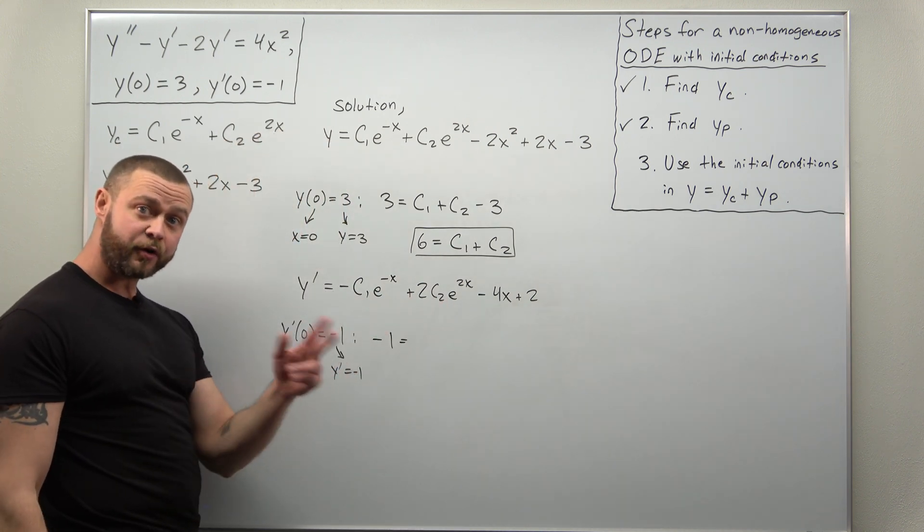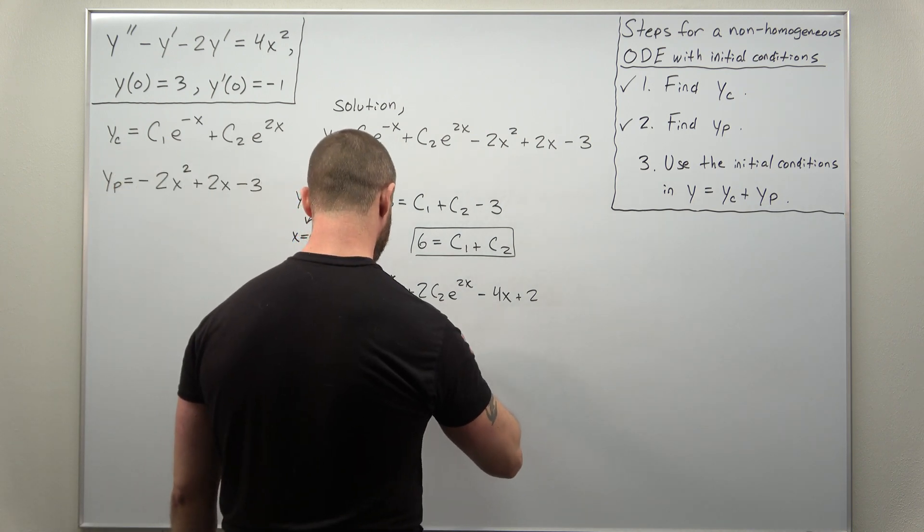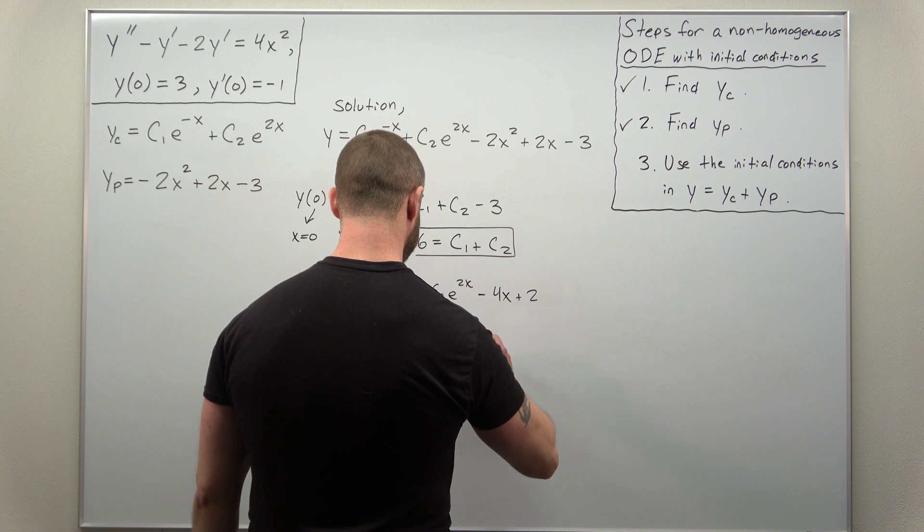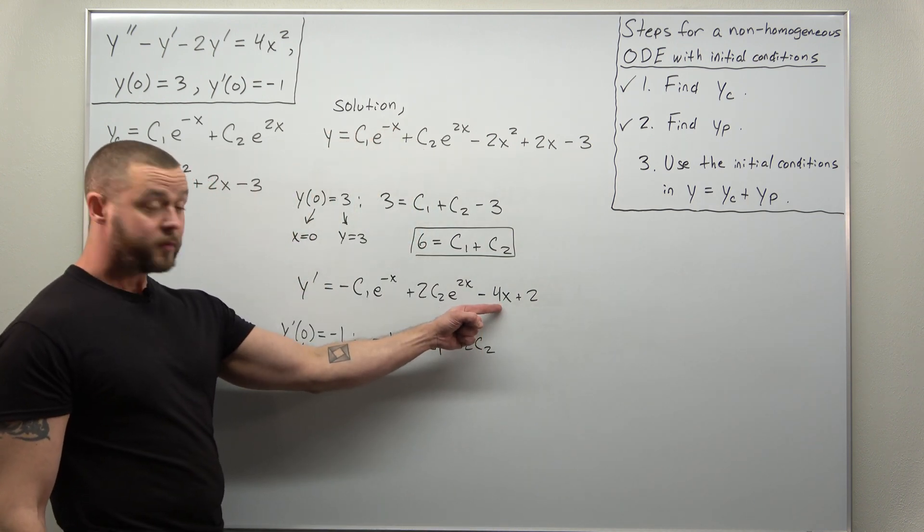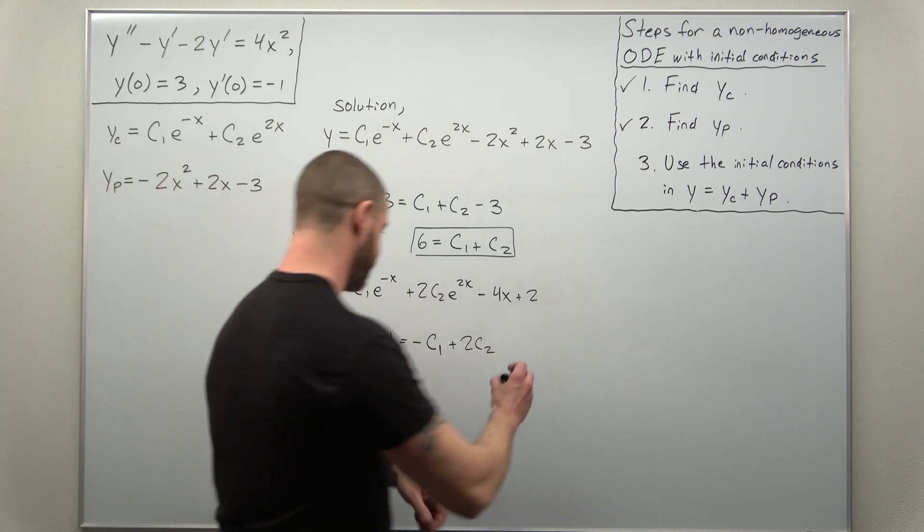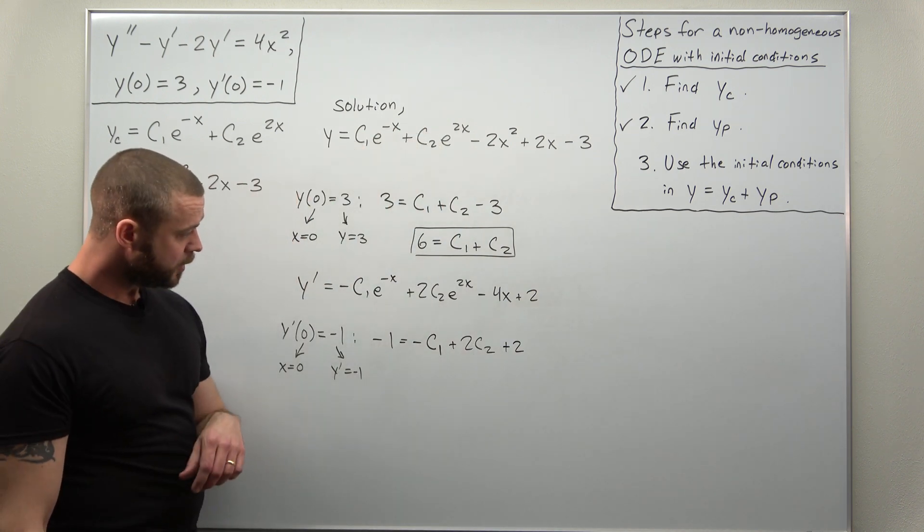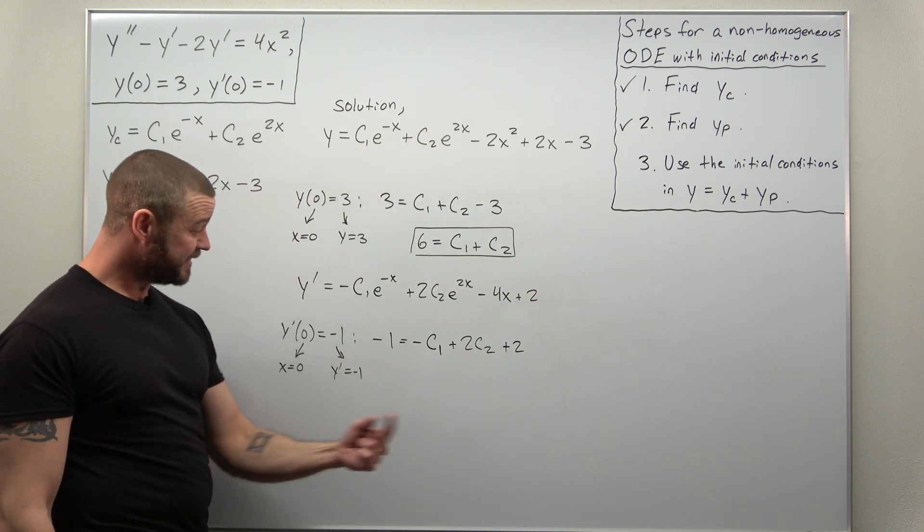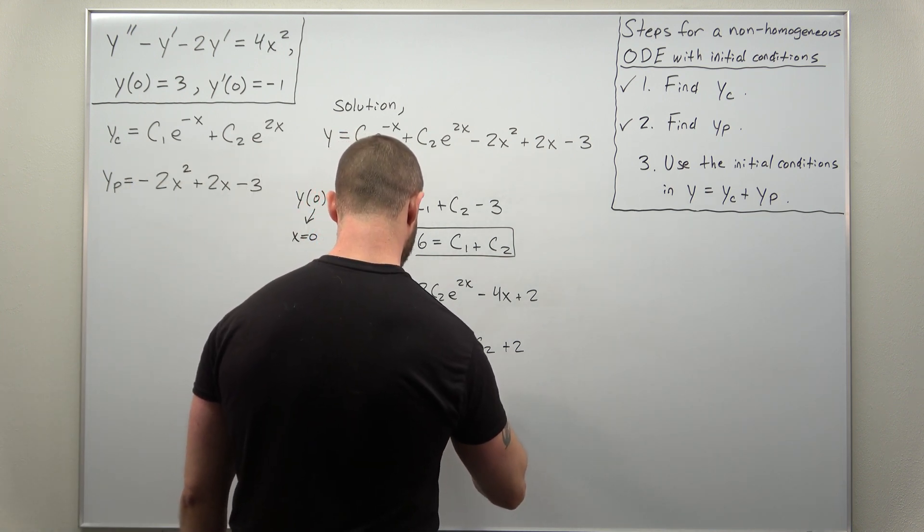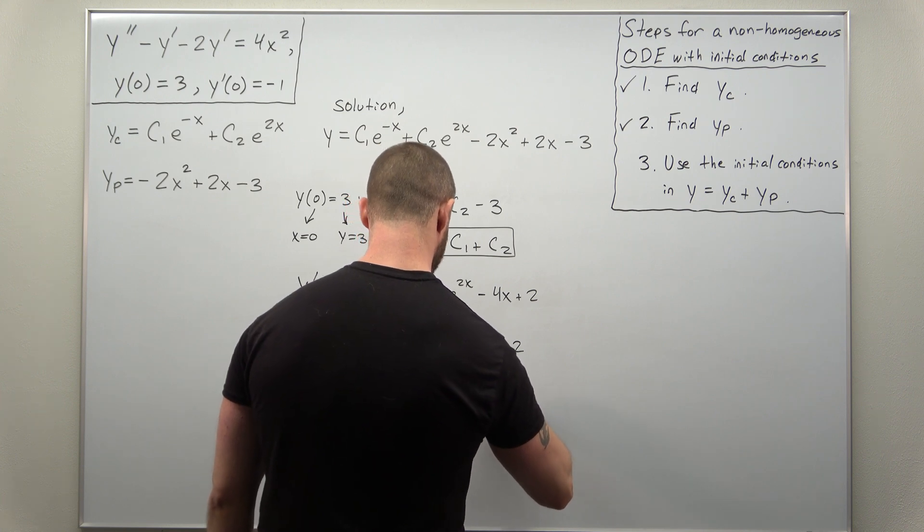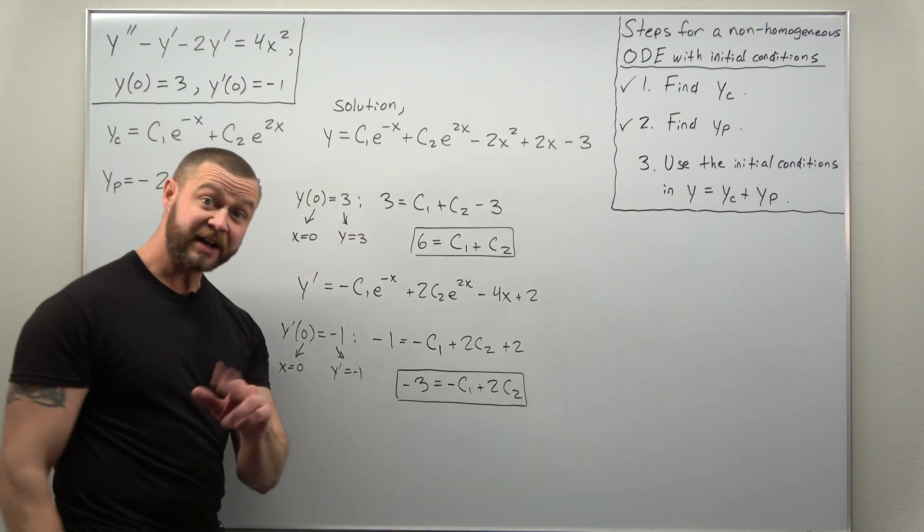And on the right side, again, because X is zero, your exponentials evaluate to one. So we're left with minus C1 plus 2C2. And notice here, X is zero, 4X goes away, but we're left with plus two at the end. All right. And it looks like I can again simplify this. I'm going to subtract three. And we get our second equation.